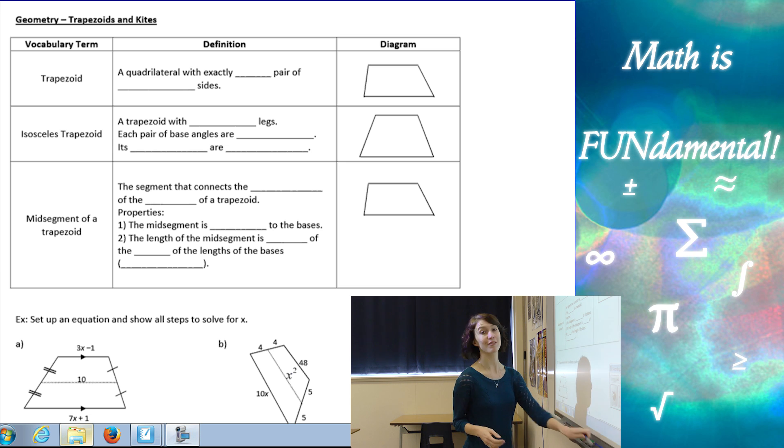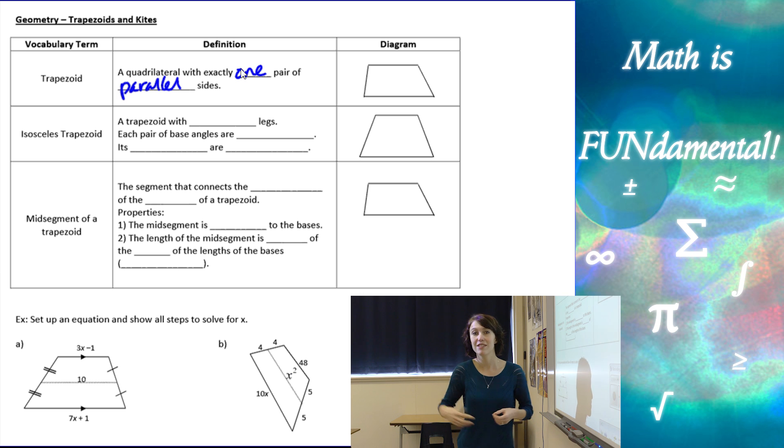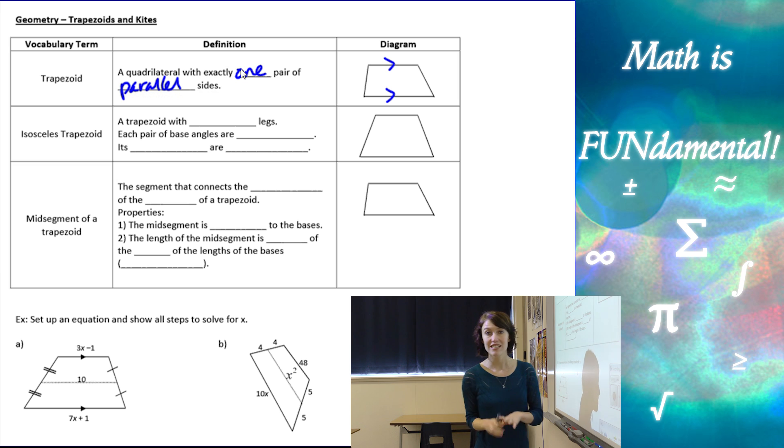So let's look at the first definition, which is a trapezoid. We have a trapezoid is a quadrilateral with exactly one pair of parallel sides. It's only allowed to have one pair of parallel sides because if it had two pairs, it'd be a parallelogram instead of a trapezoid. So here I have one pair of parallel sides. The other sides cannot be parallel.